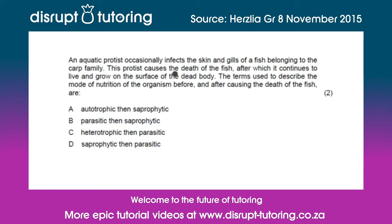Now that we know that — first, we heard that the protist causes the death of the fish after infecting it, so that means it's parasitic first. Then it continues to live and grow on the surface of the dead body, and feeding on dead tissue means it's saprophytic. So there's our answer — B is our answer: the organism is first parasitic and then saprophytic.